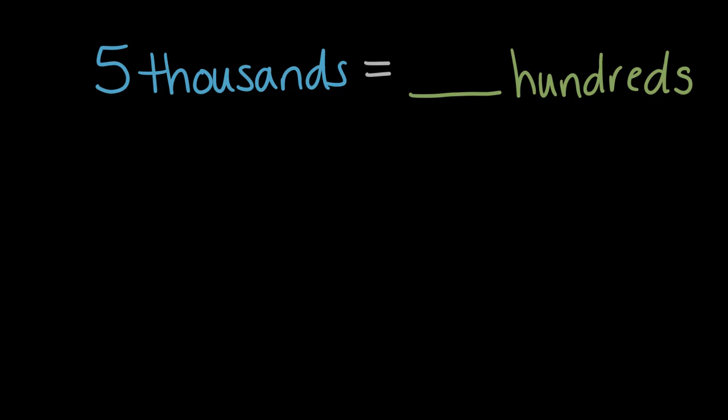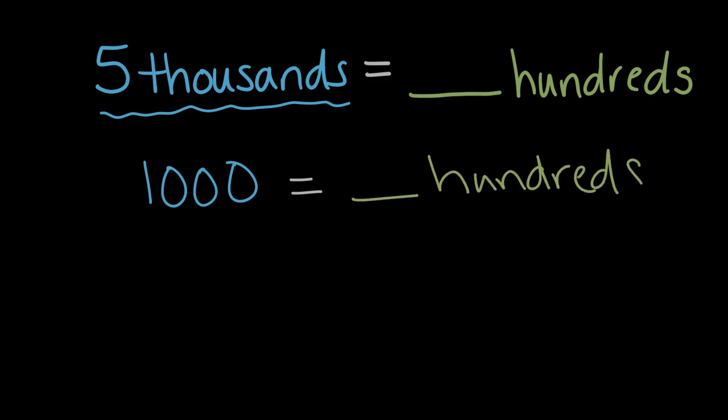Five thousands equals how many hundreds? There's probably a few ways we could take this on, but maybe let's start by thinking about these five thousands. Five thousands is one thousand five times. So let's think about each of those thousands, each of those five thousands. In one thousand, how many hundreds are in one thousand? One thousand equals how many hundreds?